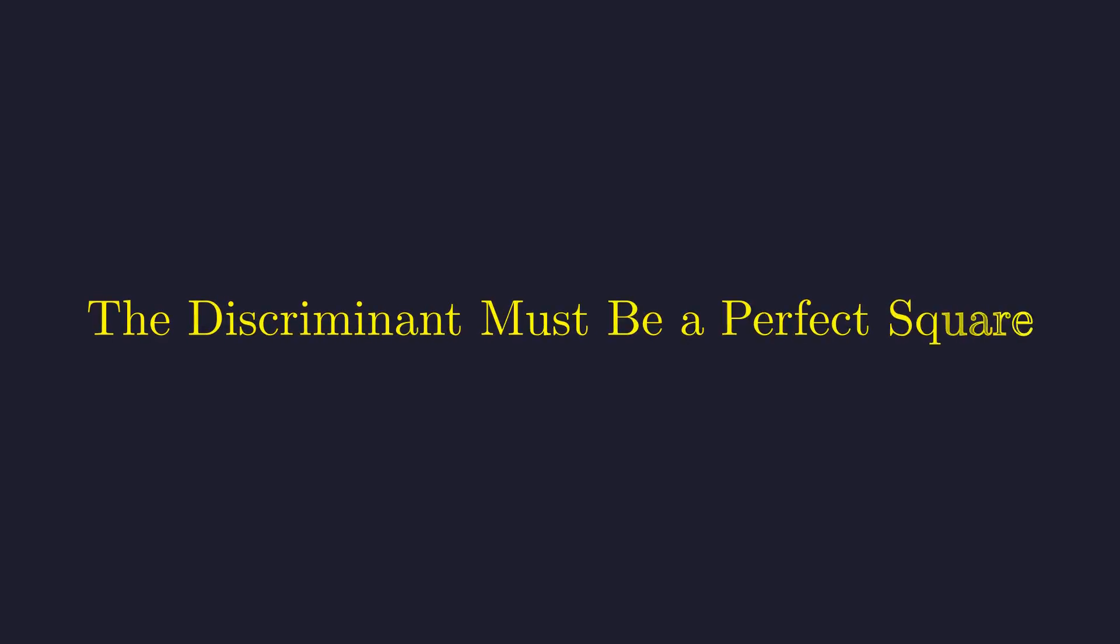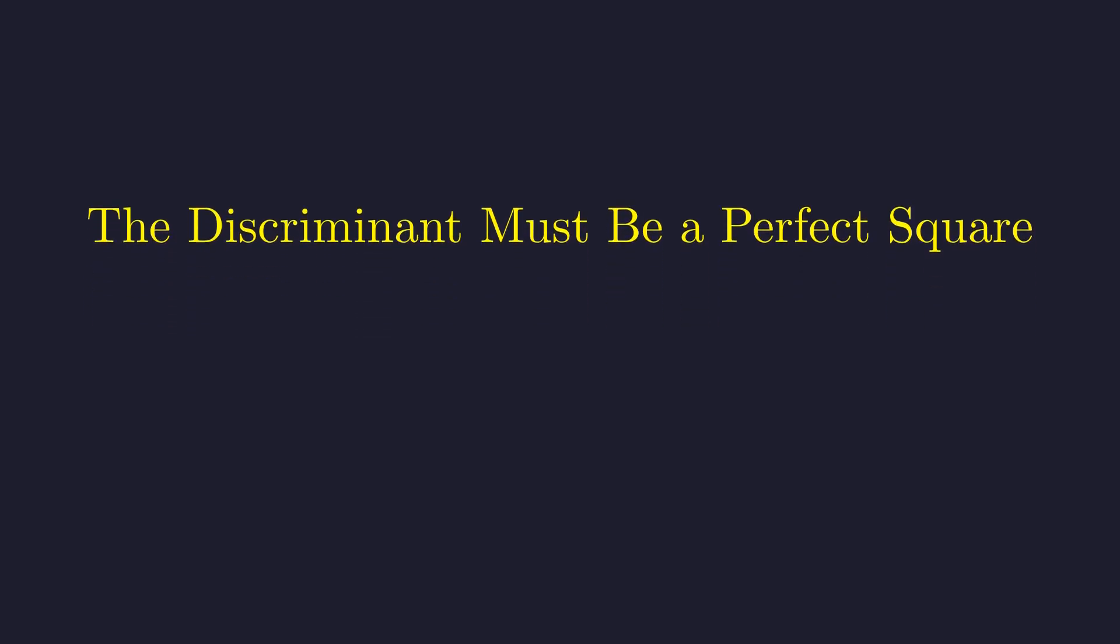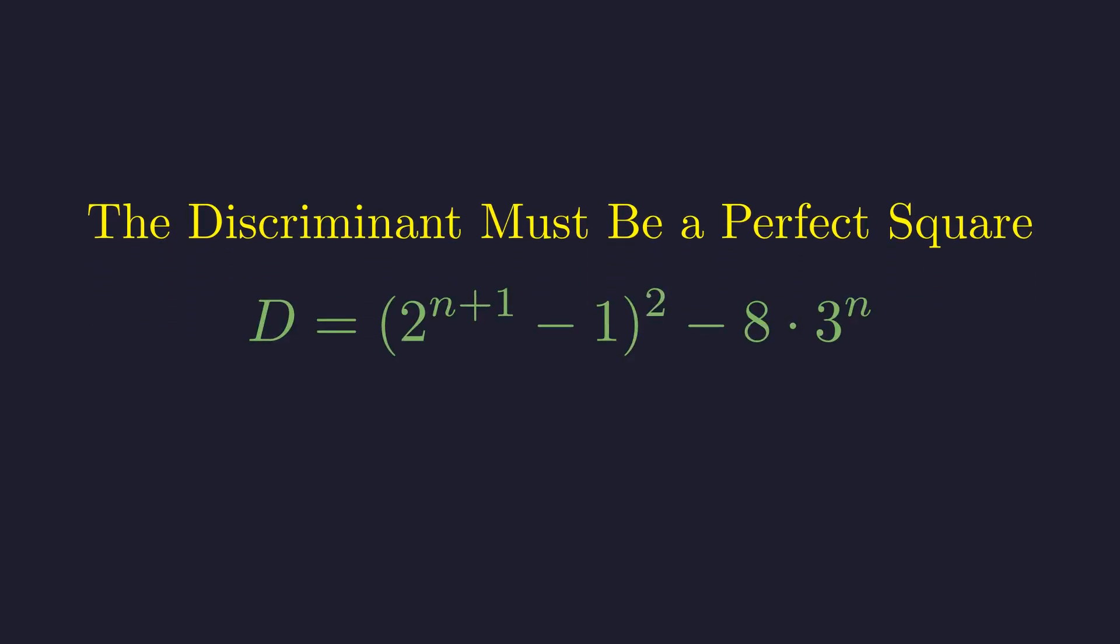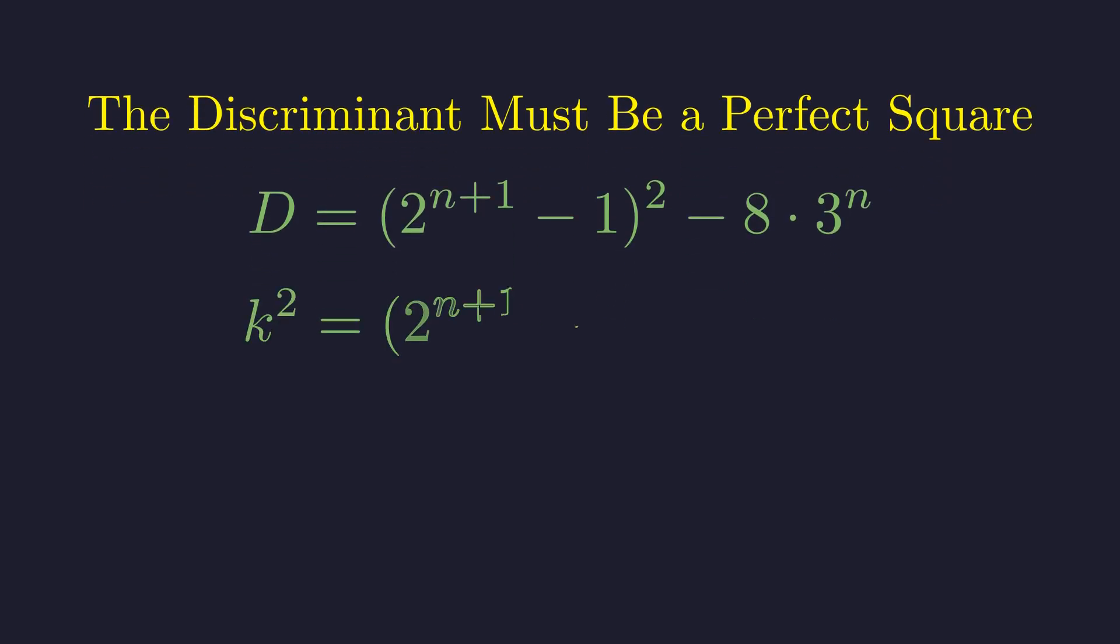The core constraint is on the discriminant. We will define it as d and require it to be a perfect square, which we denote as k squared for some non-negative integer k. The discriminant d is calculated from the coefficients b and c. Setting d equal to k squared gives us this equation.